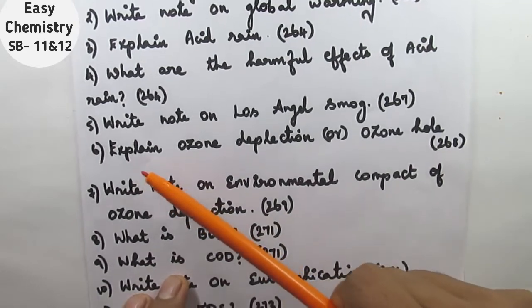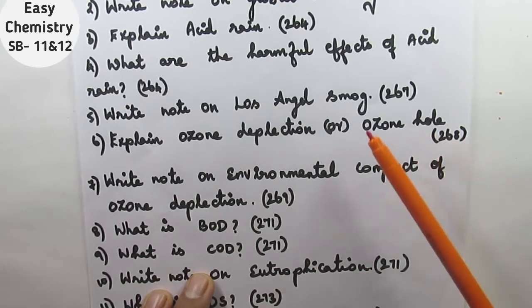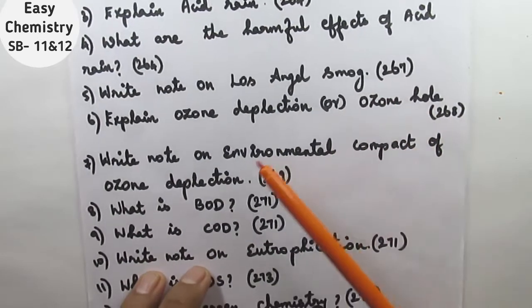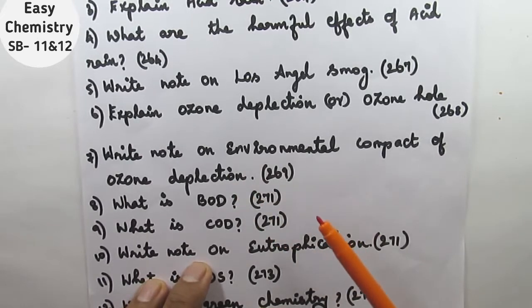Next, question number six, explain ozone depletion or ozone hole. Page number 268, very very important topic this is. Question number seven, write note on environmental impact of ozone depletion. This is on page number 269.